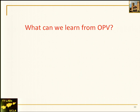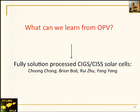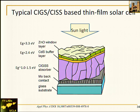For the final few minutes, I'd like to ask what we can learn from OPV research. OPV is often criticized by the inorganic field — no market share, short lifetime — yet OPV has the highest number of publications. In our group we also work on inorganic CIGS and CdTe. I'd like to introduce the fully solution-processed CIGS solar cells, work done by Dr. Chongwu Zhou, Brian Bob, Dr. Zhu, and myself. What can we learn from the low-cost solution process that Maria described?